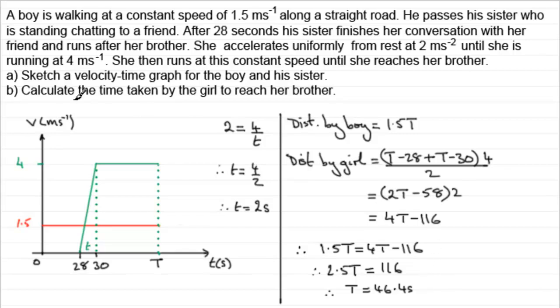Now the question is calculate the time taken by the girl to reach her brother. Well 28 seconds had already gone by when she had left chatting with her friend. So therefore the time that she took must be the t minus 28.